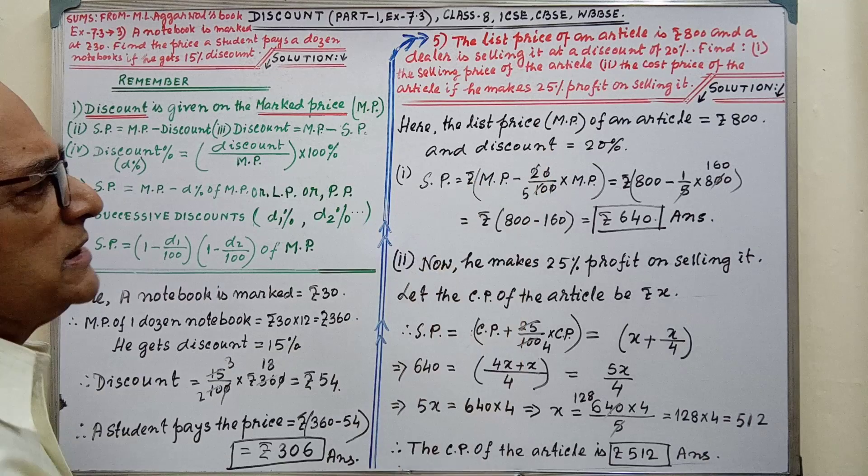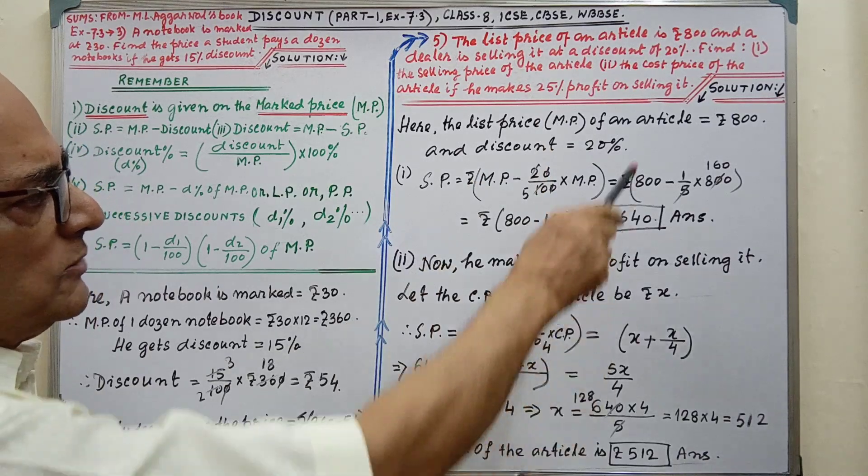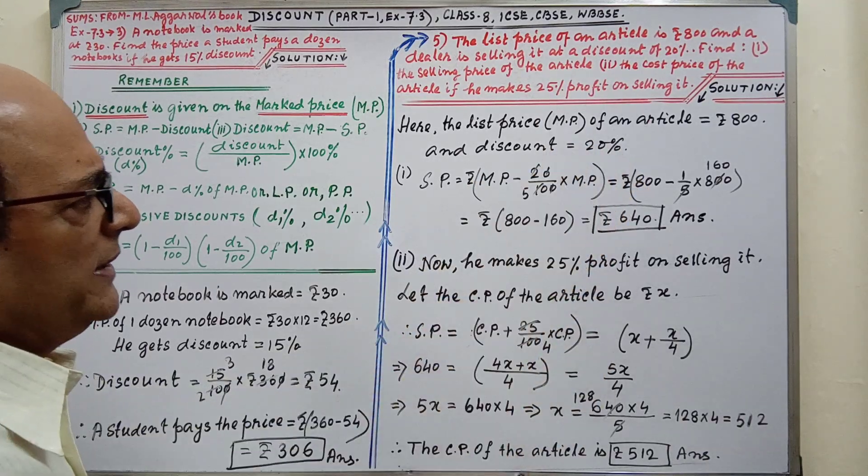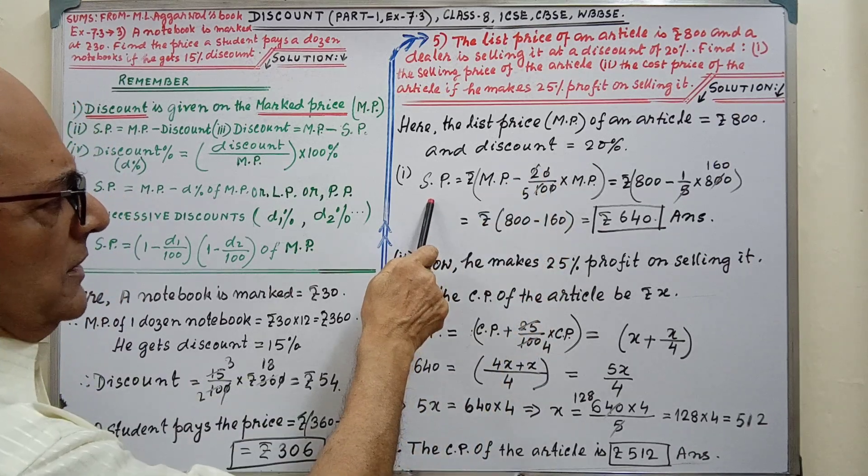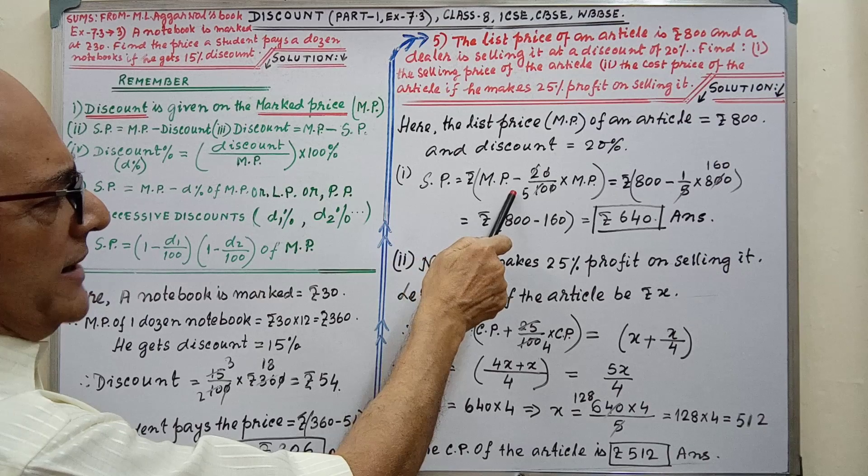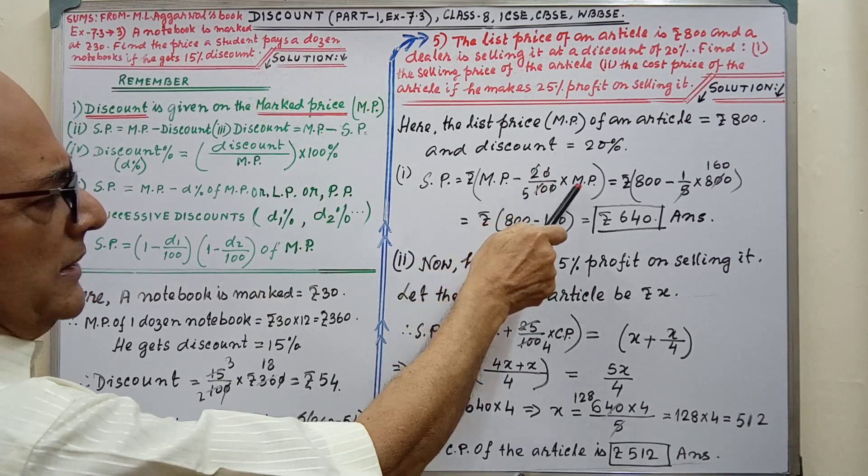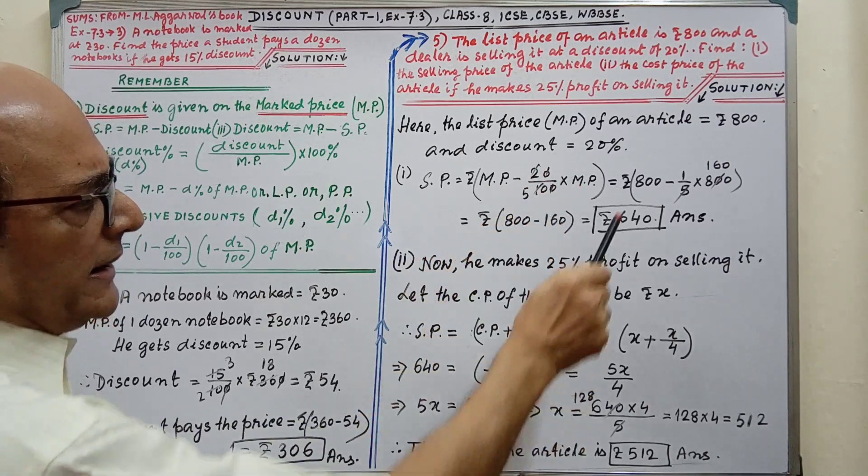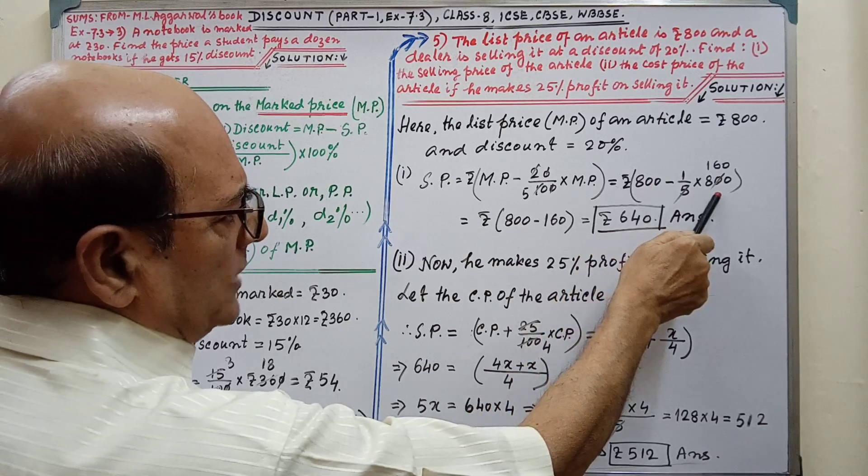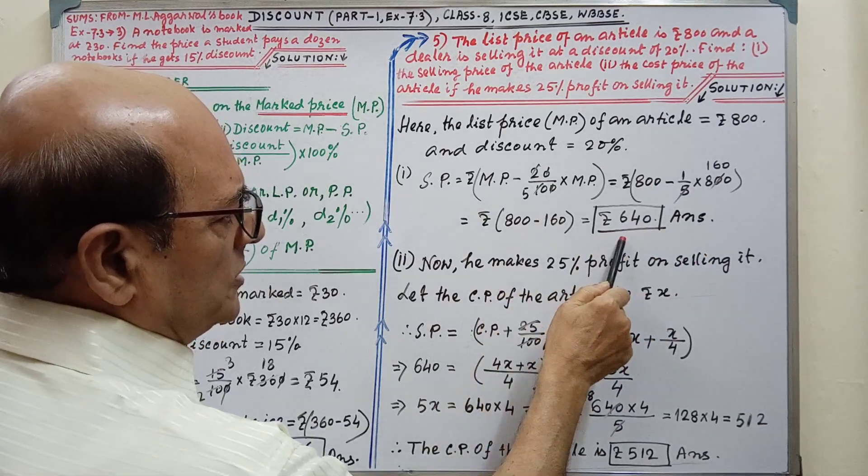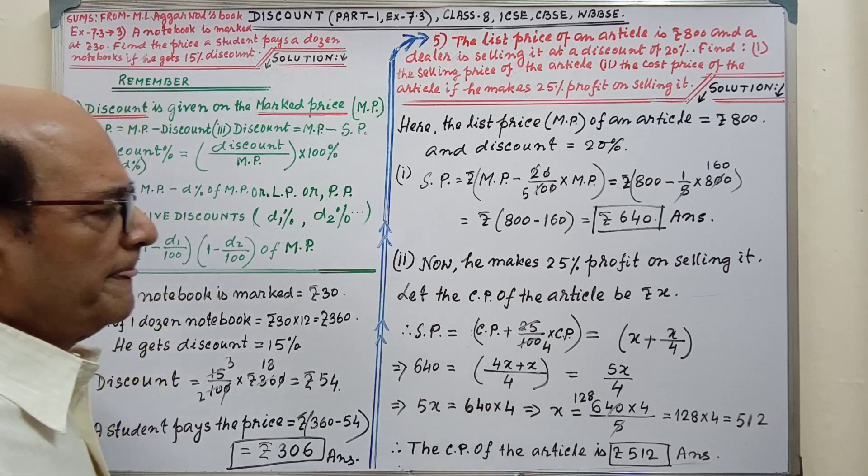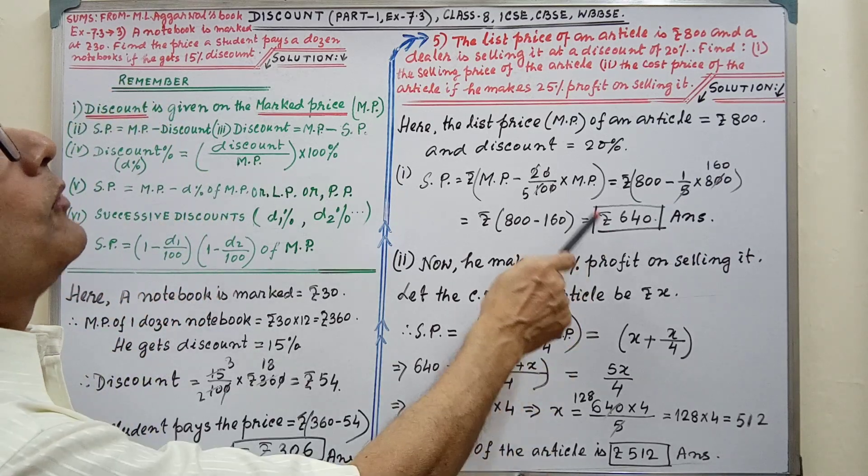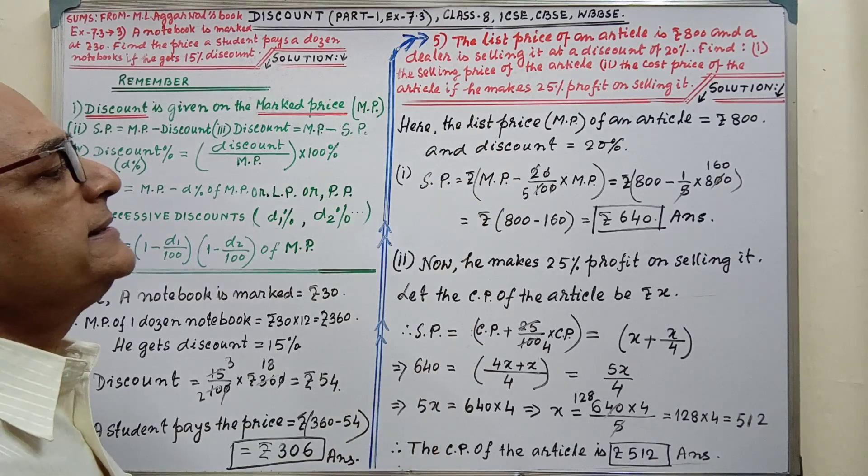The list price, that is the MP marked price, of an article = Rs 800, given, and discount 20%. SP = MP - (discount/100) × MP. By putting the values and by calculation, we are getting SP = Rs 640. That is required SP. First part is completed.